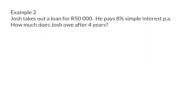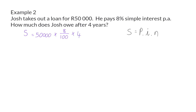Example 2. Josh takes out a loan for 50,000 Rand. He pays 8% simple interest per annum. How much does Josh owe after 4 years? This time, I am going to immediately get the total amount of interest by using the formula. I start with the loan amount of 50,000 Rand and multiply that by the interest percentage, and then he pays this for 4 years every year, so we multiply by 4. This means he pays a total of 16,000 Rand interest.